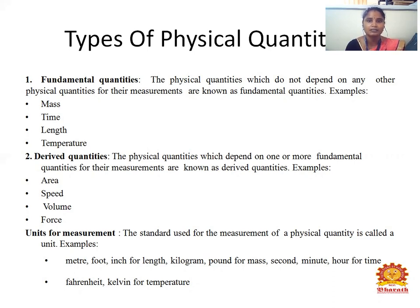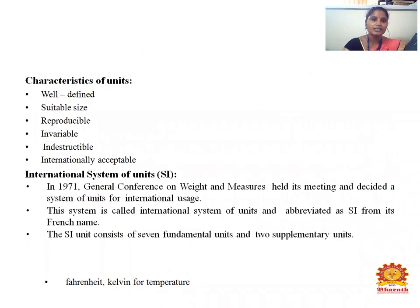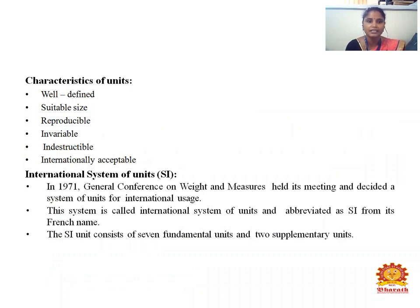Next, unit for measurement. The standard used for the measurement of a physical quantity is called a unit. For example, meter, foot, and inch are used for length; kilogram and pound for mass; second for time; and Kelvin for temperature. The characteristics of a unit are: it is well-defined, of suitable size, irreproducible, invariable, indescribable, and internationally acceptable.